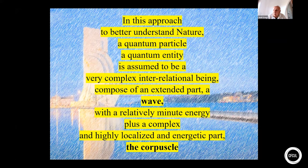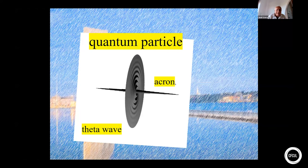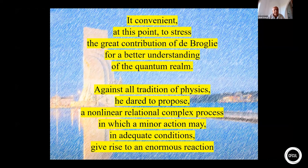In this approach, to better understand the nature of the quantum particle, a quantum entity is assumed to be a very complex interrelational being, composite, composed of an extended part—the wave with relatively minute energy—plus a complex and highly localized and energetic part. This is a representation for the quantum particle. This is the extended wave, and the singularity or the particle. Practically all the energy of the particle is concentrated in the particle, in the singularity. The zeta wave or the empty wave practically has no energy. Even though it is a kind of very high energy wave, we are always dealing with waves, but the very energetic concentrated wave and the extended wave.